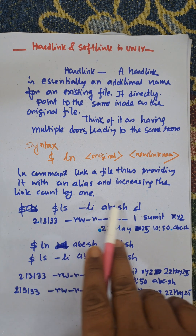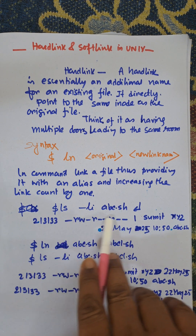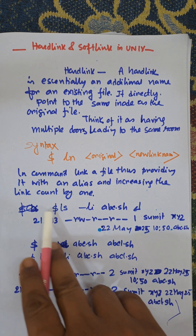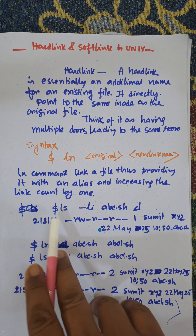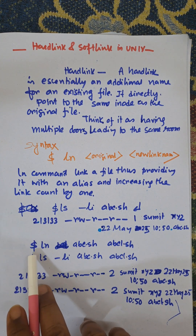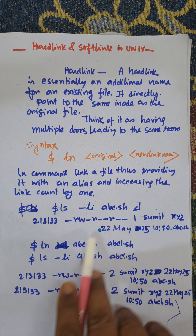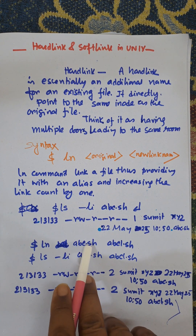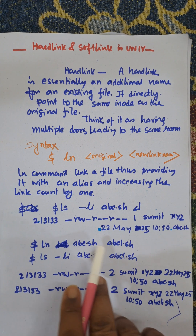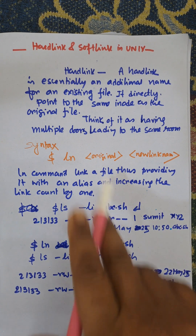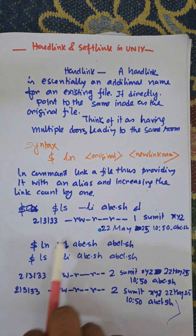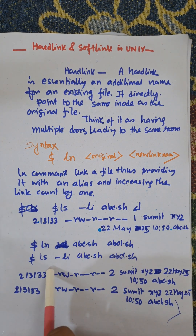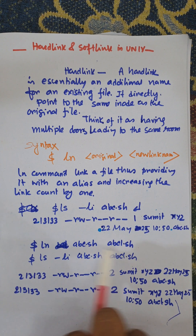Here, ls -li is used to display the listing of that file. This is the inode number of that file. Now, when we want to link this file to another file, this is the original file and this is the link file. So this is the syntax of the ln command — this is the original file and this is the link file, and these are linked together.